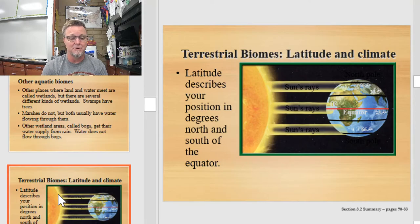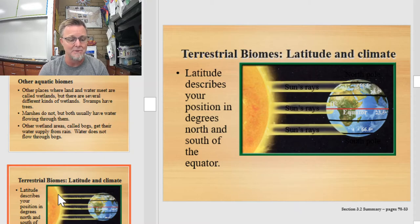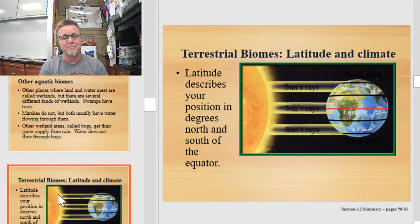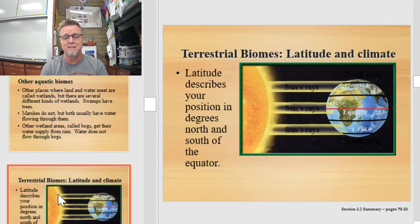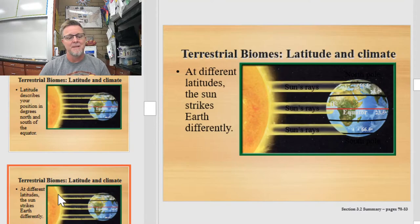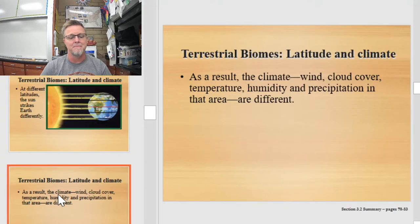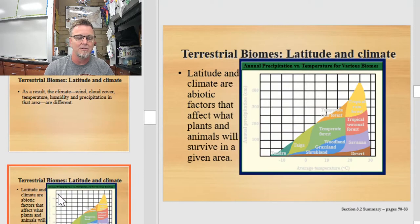When thinking about what causes life on land to be different, we've got to look at latitude and climate. Latitude describes your position in degrees north and south of the equator, and depending on where you are relative to the equator will determine how much direct sunlight you get. The amount of direct sunlight translates directly to temperature and rainfall — huge factors determining who lives where and why. At different latitudes, the sun strikes the earth differently, producing differences in climate, wind, cloud cover, temperature, humidity, and precipitation.